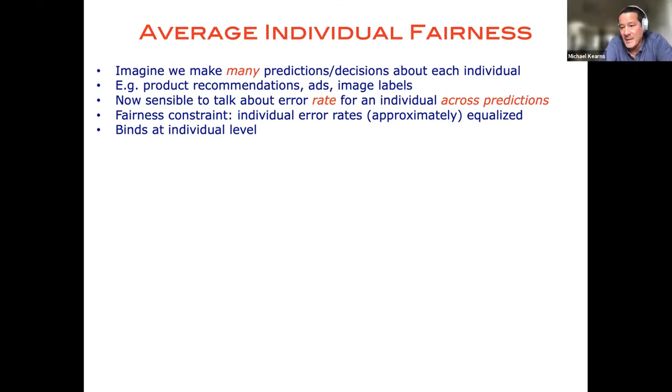I might make many product recommendations to you on Amazon over time; Google might over time make many decisions about what ads to show you. We might label the same image with many different labels like people, indoors, ocean, things that are outdoors, things like that. And once we do this, it's sensible to talk about not just the error rate across a population on a single problem, but the error rate for you across multiple problems. So if I've made a series of product recommendations to you and some of them were good and some of them were bad, we can talk about my error rate in making product recommendations to you in particular.